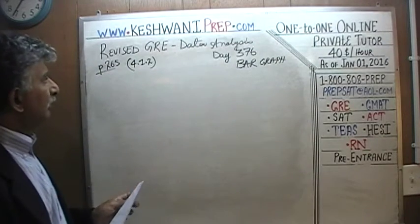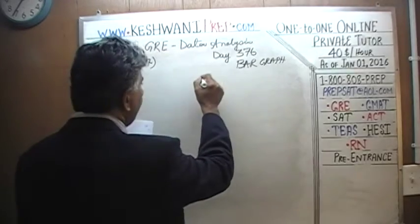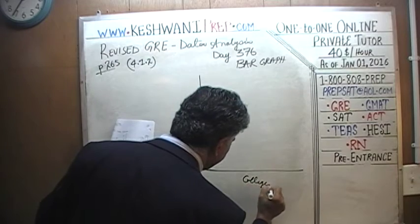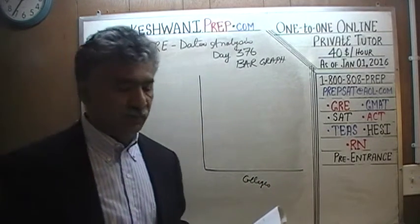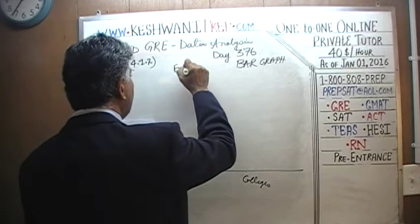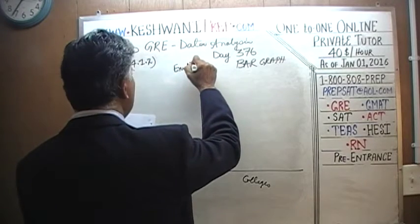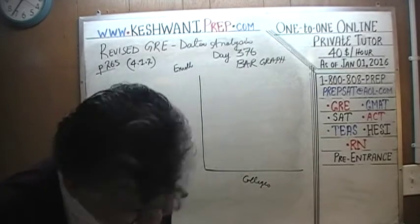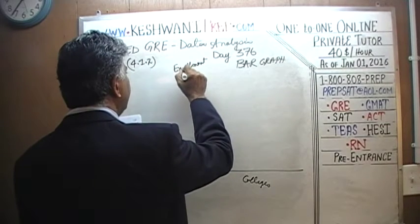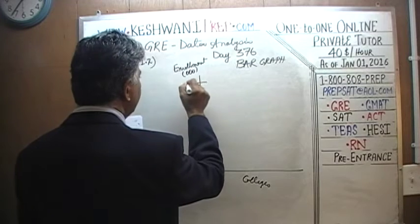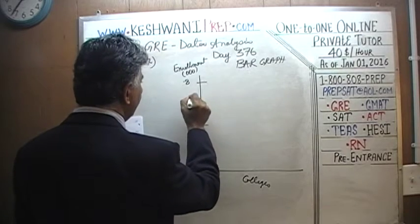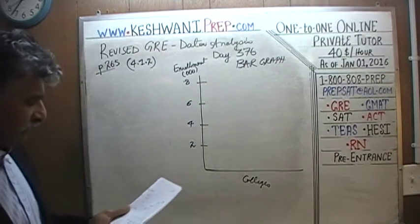First, the graph itself — we are going to put it right here as best as we can. We have colleges here, and apparently five colleges, A through E. We have enrollment here expressed in thousands. Here is our 8; cut it in half, that is your 4; cut it in half again, that is your 2; and this is your 6. That is close enough for us to start.